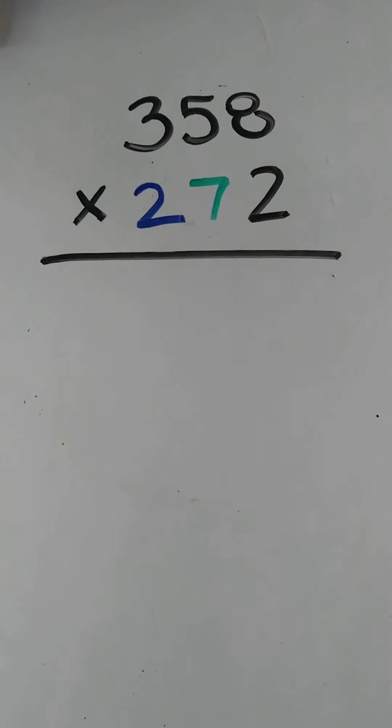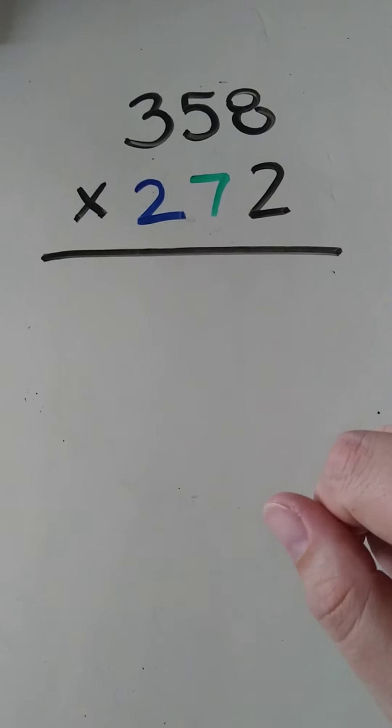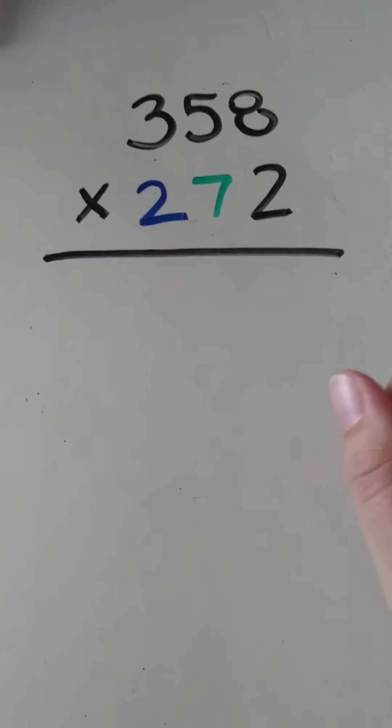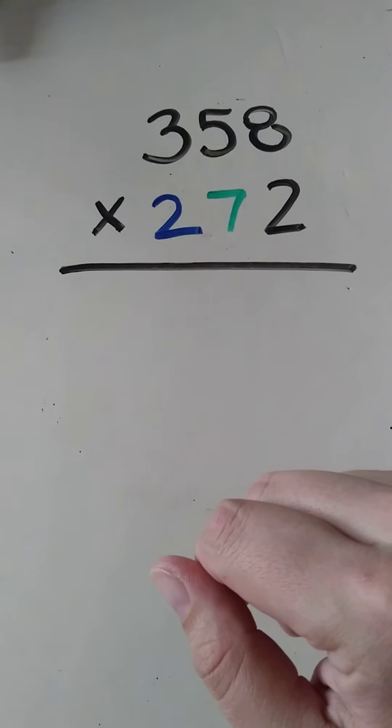So this is how you do three digit by three digit multiplication. So today we're going to do 358 times 272, and what I've done is I've changed the colors of the 2 and the 7 here and I'll explain why a little bit later on.